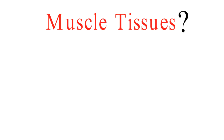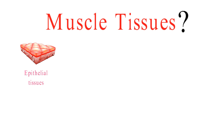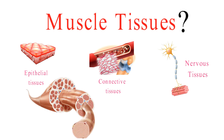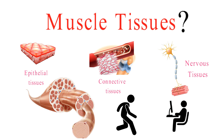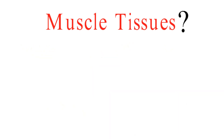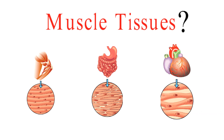First things first, what exactly are muscle tissues? Well, they're one of the four primary types of tissues in our bodies, along with epithelial, connective, and nervous tissues. Muscle tissues are unique because they allow us to move, maintain posture, and perform various functions. There are three main types of muscle tissue: skeletal, smooth, and cardiac.